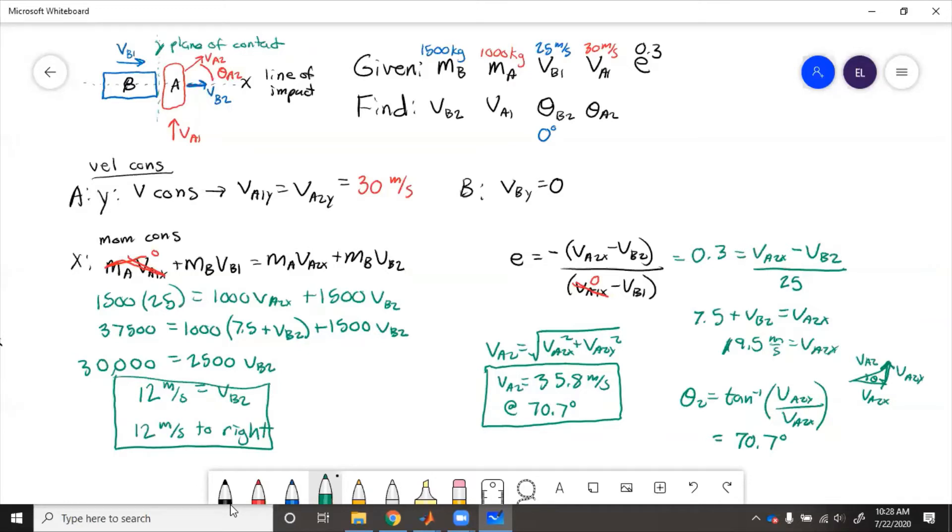Now this answer should kind of make sense because we know that B is going to slow down once it hits something. It was going 25 at first and now it's only going 12. So it did slow down. And then A is going to still be going full speed in the Y direction. So then its total velocity, now that it's also getting pushed in the X direction, should be a little bit bigger. So 35.8 is bigger than 30.